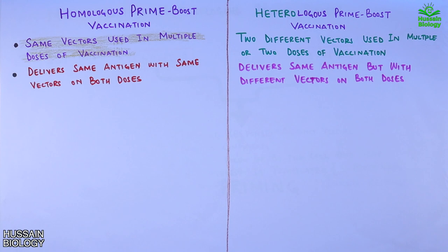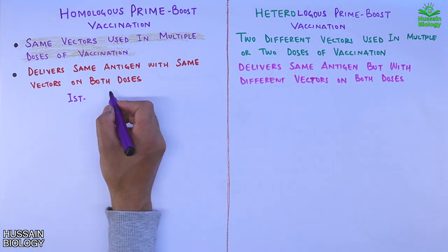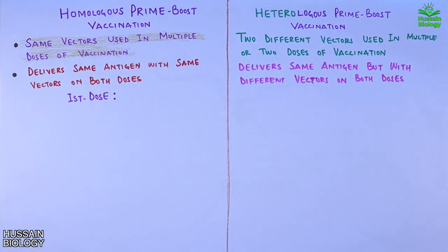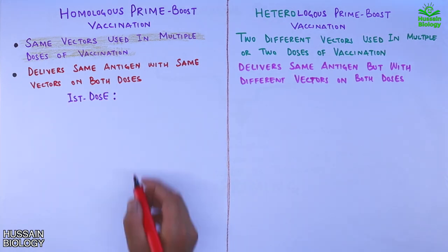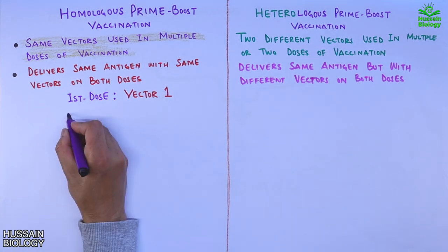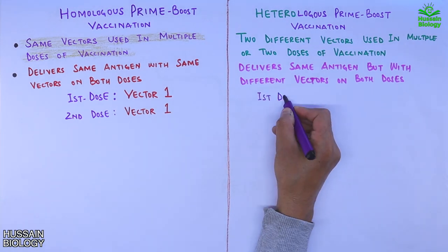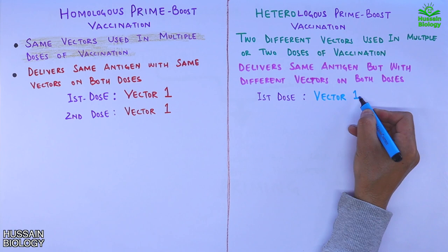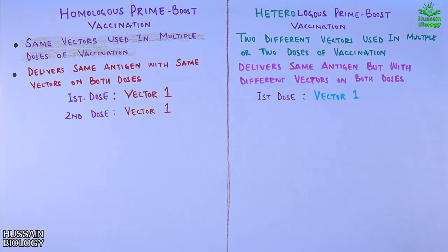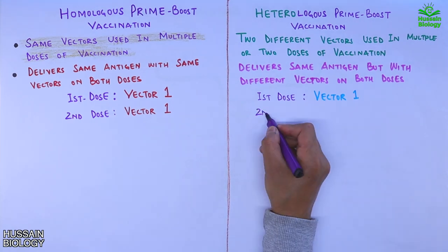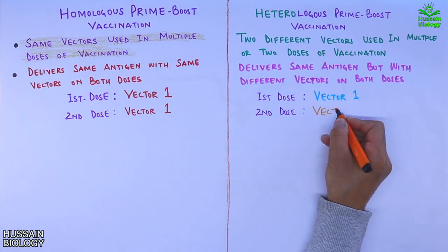In homologous prime-boost, the first dose uses vector one and the second dose also uses the same vector one. Whereas in heterologous prime-boost vaccination, the first dose uses vector one and the second dose uses vector two.